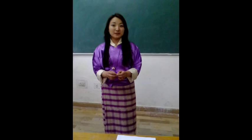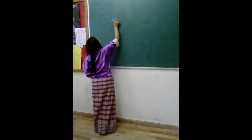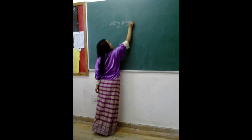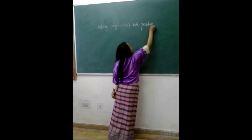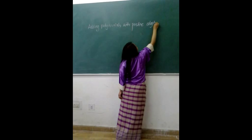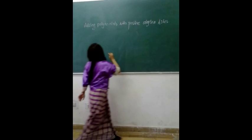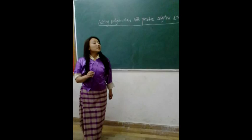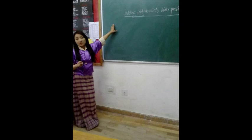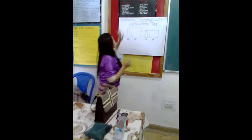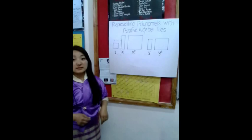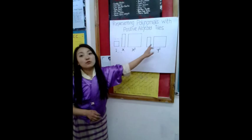Are you clear? Yes, ma'am. Okay. The topic is adding polynomials with positive algebra tiles. So, this is the topic that we are going to discuss. Before we go on to the example, we will learn how to represent the polynomials with positive algebra tiles. I have brought one chart paper representing polynomials with positive algebra tiles. We have got one, two, three, four, five different types.